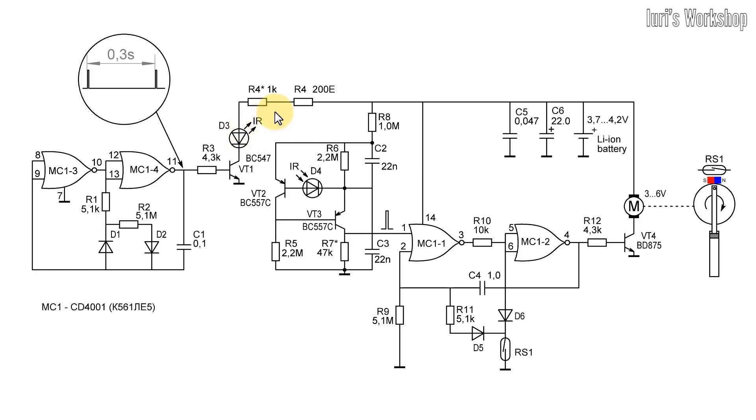Infrared light pulses, which are reflected from the user's hand, are received by an infrared photodiode that is connected to a differentiating amplifier. The first amplified impulse starts the timer, which is assembled on 2 NOR elements.